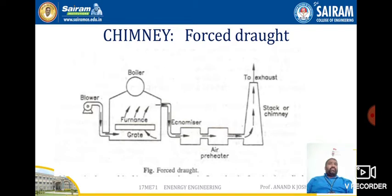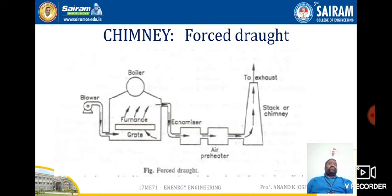In the forced draft arrangement, the blower is placed at the bottom of the grate with the furnace above. Once steam is generated, the economizer and air preheater are used, and the flue gas is discharged through the stack or chimney. The function of the chimney here is to discharge gases high into the atmosphere to prevent contamination. It is not significant for producing draft, so the chimney height does not need to be very tall in a forced draft system.